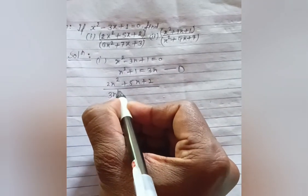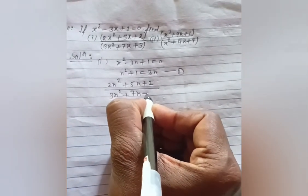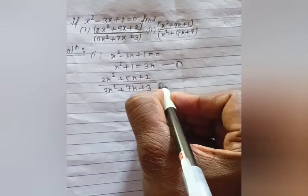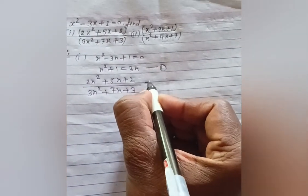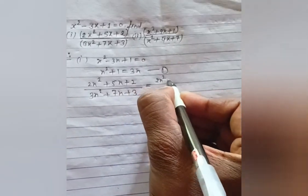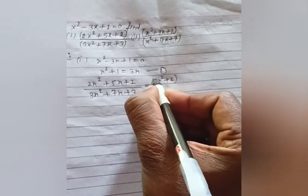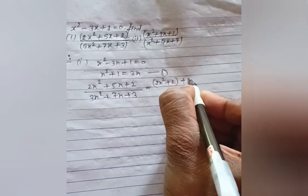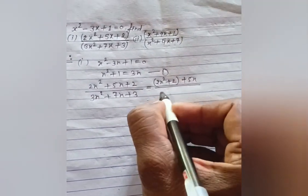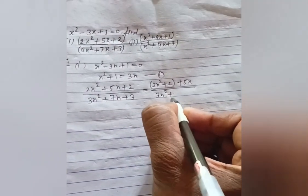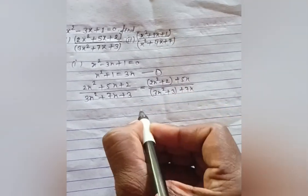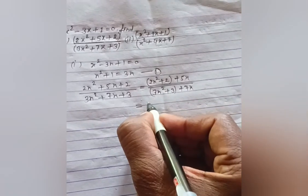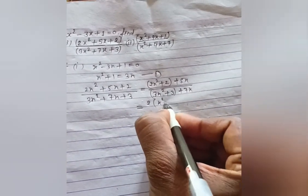divided by 3x² + 7x + 3. Let me factor the numerator: 2x² + 5x + 2 = 2(x² + 1) + 5x. Similarly, the denominator 3x² + 7x + 3 = 3(x² + 1)